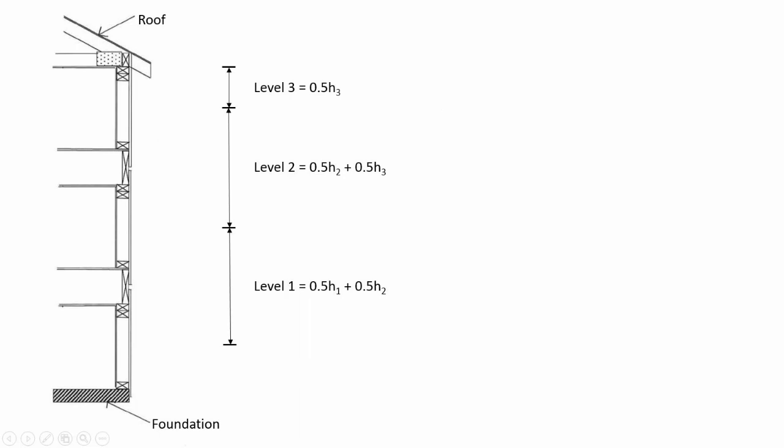This is also true for a one-story structure, where the total wall height considered for the mass is only half of the actual wall height. The area of the wall per level is considered in the vertical plane and ignores openings such as windows and doors, as these generally have greater self-weight.